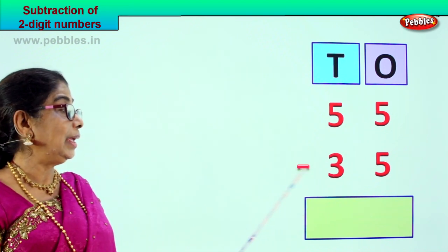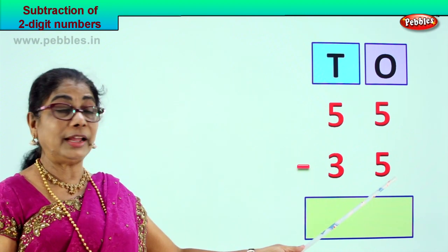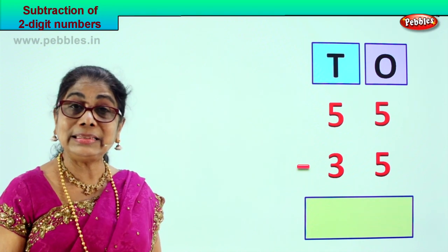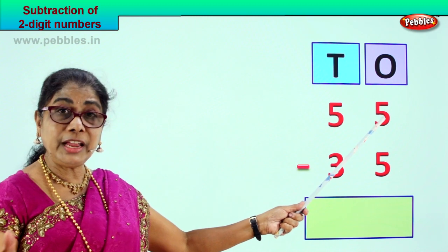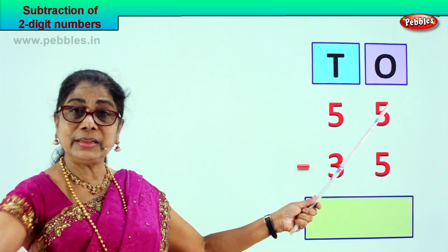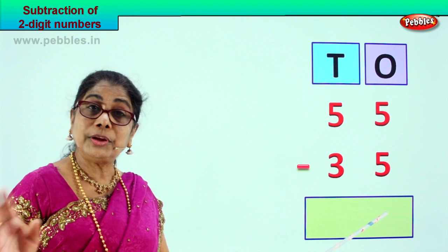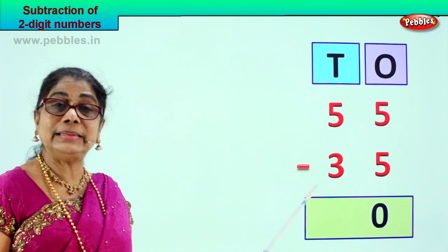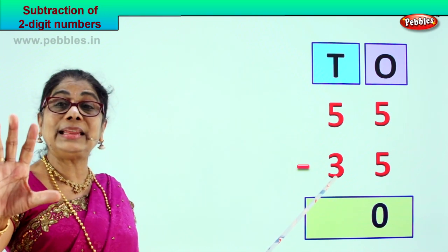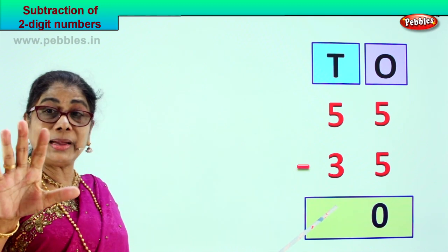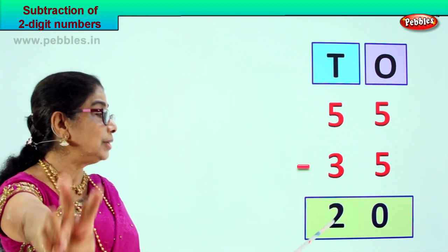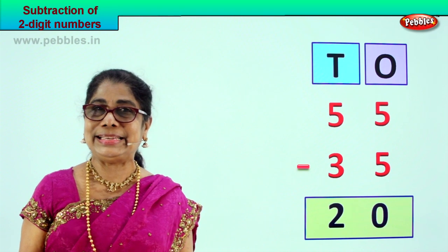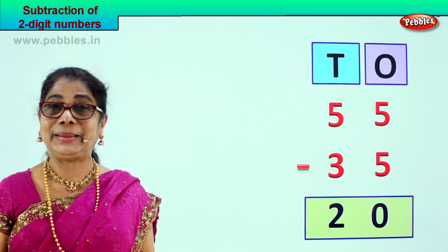Let's take a new sum. 55 take away 35 — 55 minus 35. We have put them in ones and tens order: five tens, five ones, three tens, five ones. Look at the ones place — five minus five, five take away five gives you zero. Now the tens place: five minus three — one, two, three — you get two. Your answer is 20. 55 minus 35 is 20.